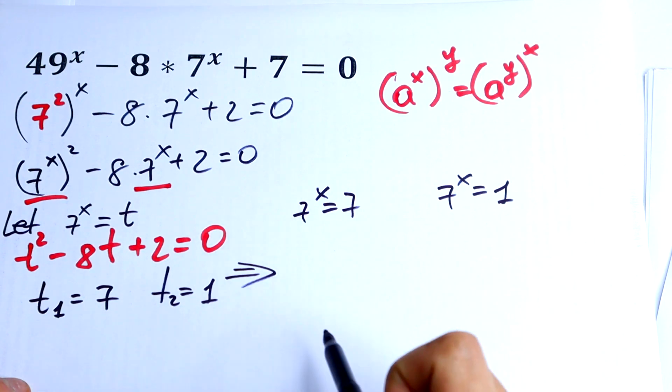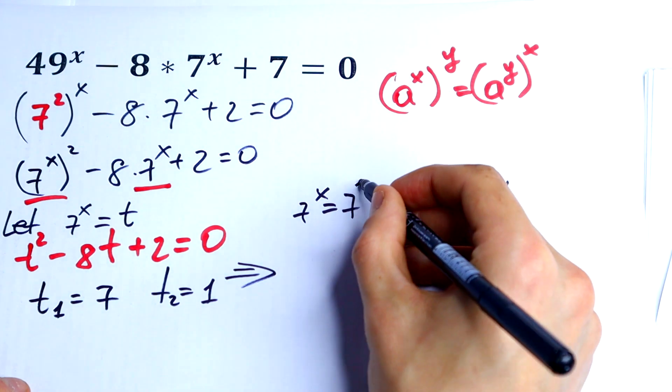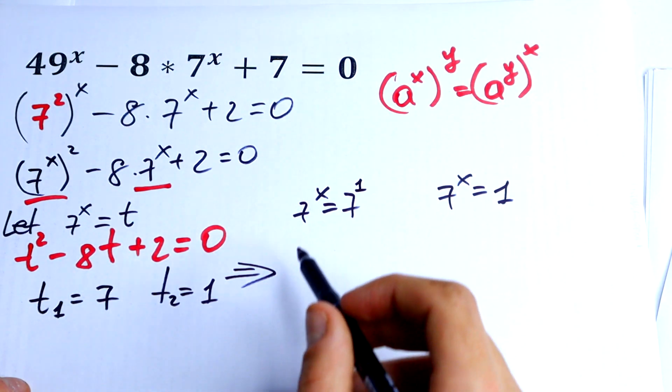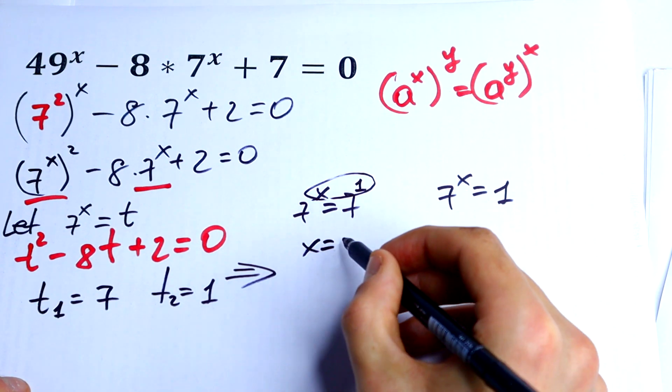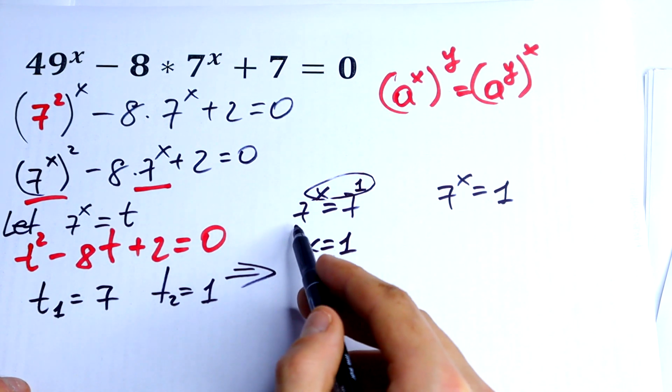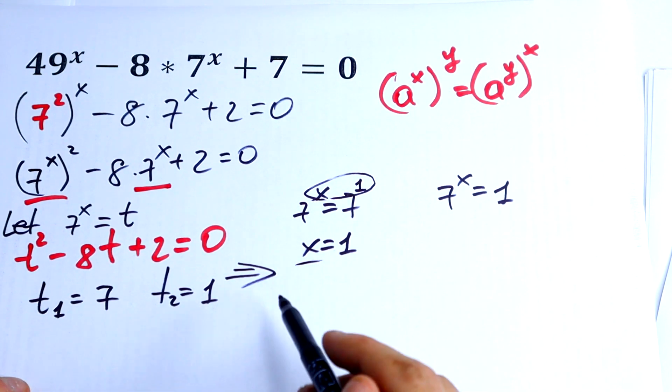This is a classic exponential equation. So we have the same basis. This right here is 1. So our solution is x would be equal to 1, because we have the same basis and we just need to write this equation right here.